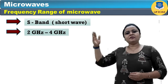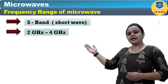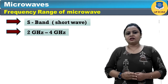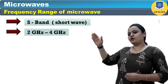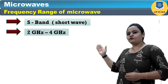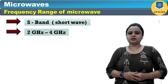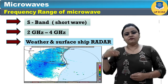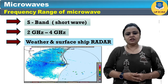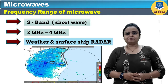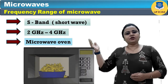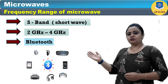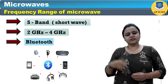The second band is the S band, known as short waves. It ranges from 2 to 4 GHz and is used in weather and surface ship radars, microwave ovens, Bluetooth devices, etc.